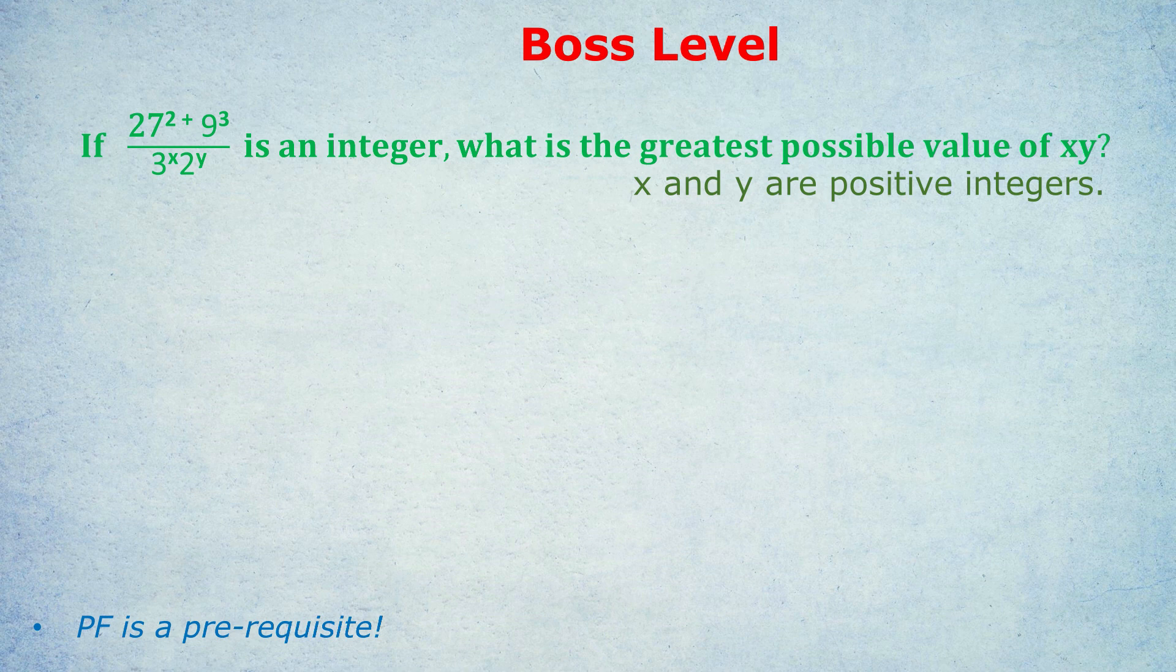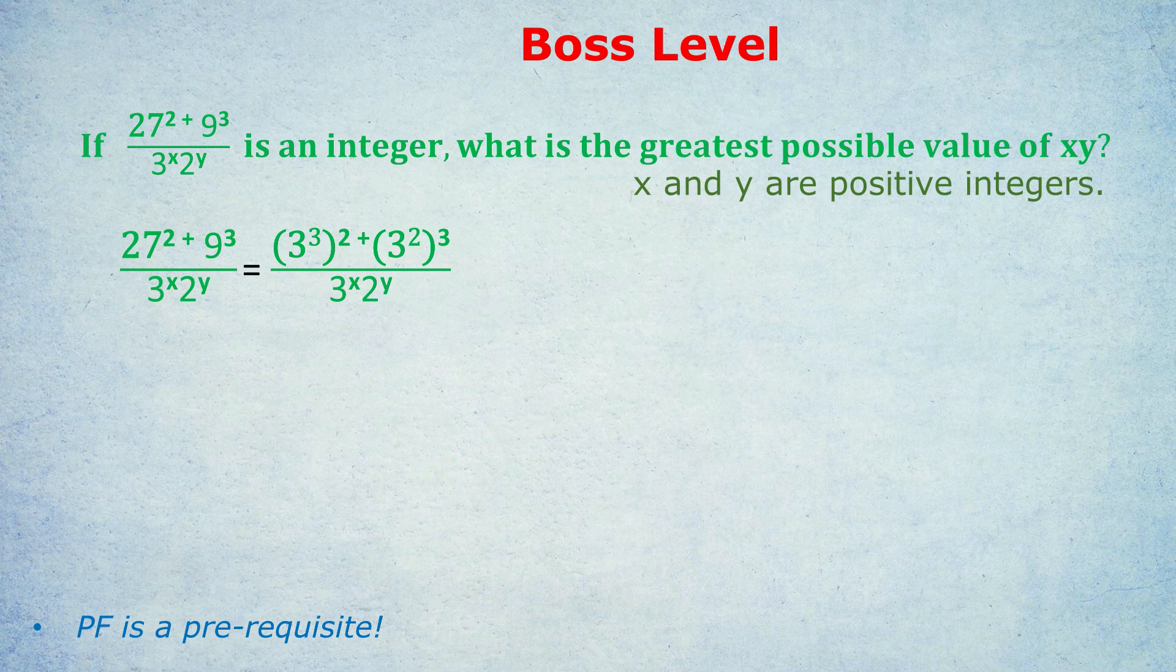What is 27 written in prime factored form? It would be 3 cubed. So I've replaced the 27 with the 3 cubed in brackets. What would 9 be in prime factorized form? It would be 3 squared. So I just remove the 9 and write 3 squared in brackets in its place.